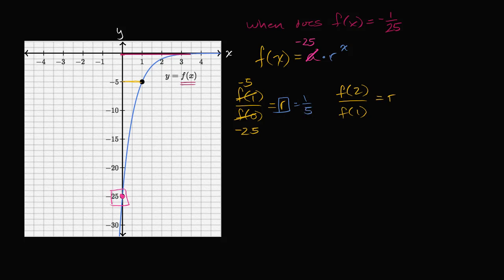So now we can write an expression that defines f of x. f of x is going to be equal to negative 25 times one-fifth to the x power.